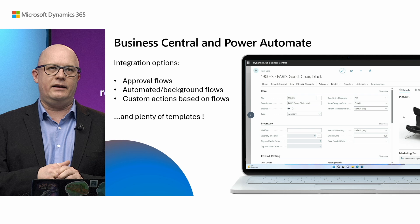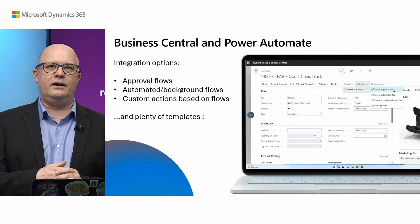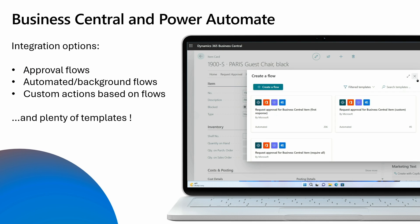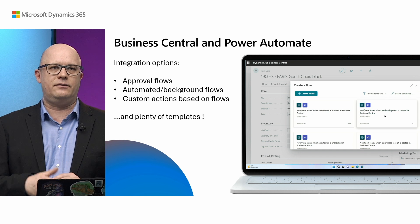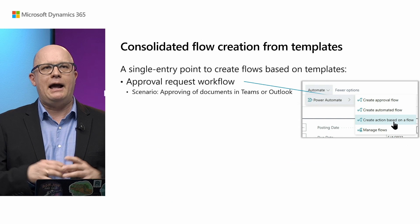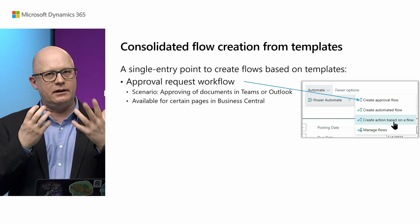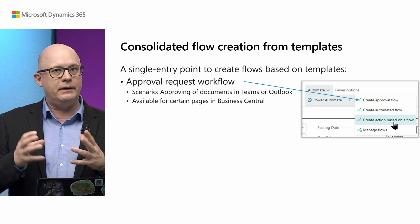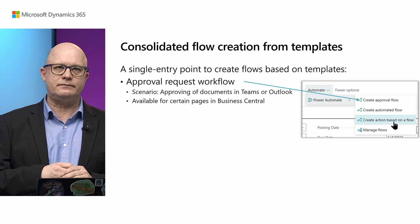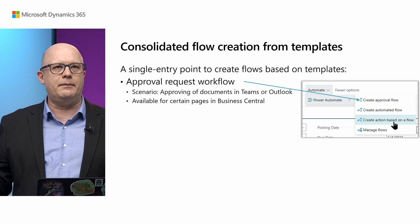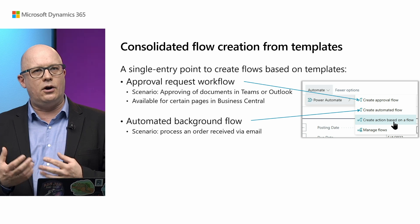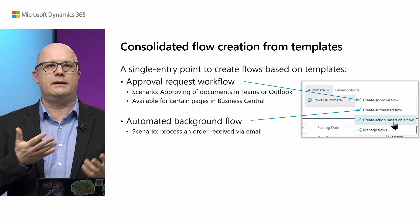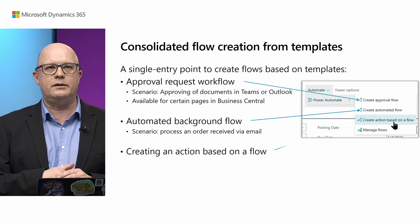We'll start with our integration with Power Automate and the improvements we made in that area. Business Central is already nicely connected with Power Automate. It allows you to build automations and workflows in different categories: approval flows, automated flows, and even custom actions based on Power Automate. We have a single entry point, a single UI to start building flows with Power Automate from within Business Central. You can work on approval workflows — for instance, approving documents using Teams or Outlook — and automated flows that run in the background, such as processing emails or invoices coming from third-party systems.